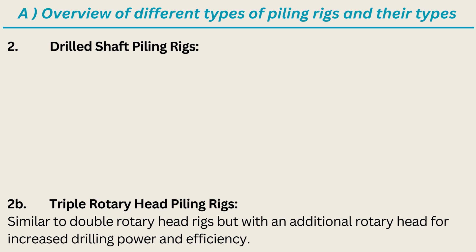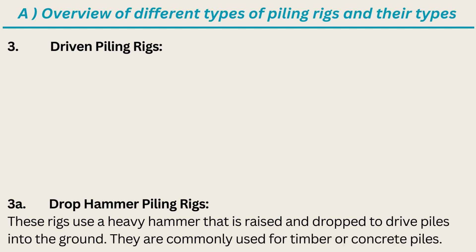Triple Rotary Head Piling Rigs: similar to double rotary head rigs, but with an additional rotary head for increased drilling power and efficiency. Driven Piling Rigs — Drop Hammer Piling Rigs: these rigs use a heavy hammer that is raised and dropped to drive piles into the ground. They are commonly used for timber or concrete piles.